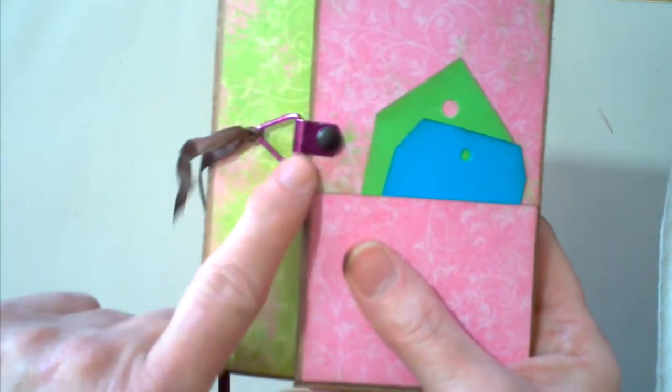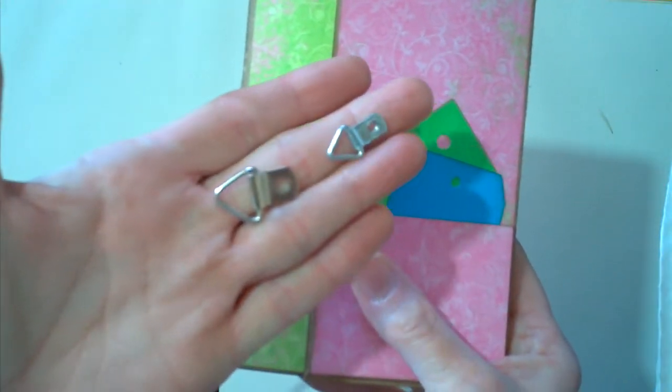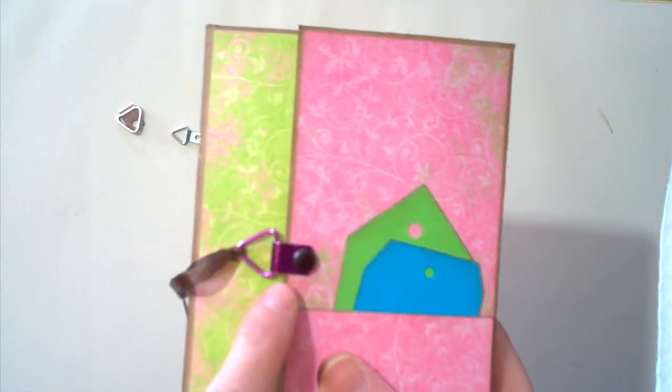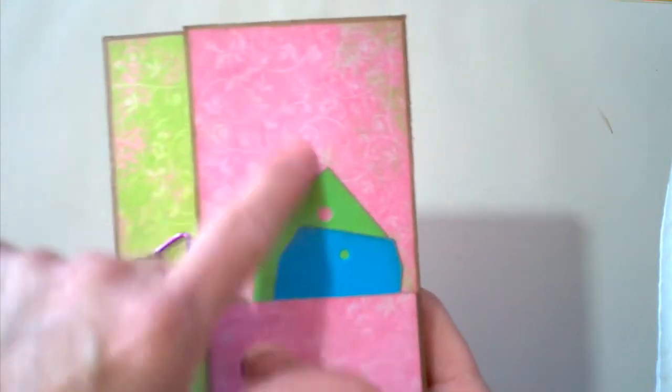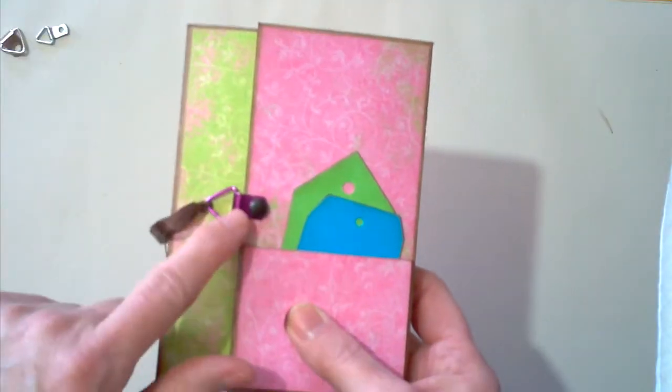This is actually a picture hanger. They come like this. There's two different sizes that I happen to have. And I colored this one with some alcohol ink so that it would better match a color that was used in my book. So I used one of the pink colors.